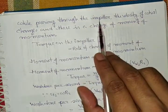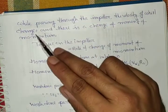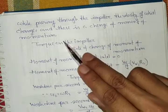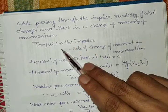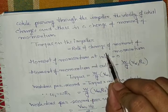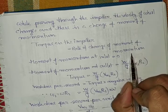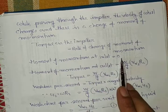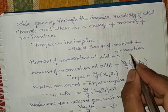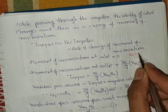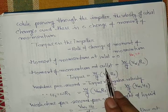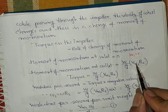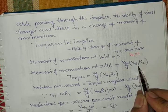While passing through the impeller, the velocity of the whirl changes and there is a change in moment of momentum. Torque on the impeller equals the rate of change of moment of momentum. Momentum at inlet is zero since VW1 is zero, and momentum at outlet will be (W/g)·VW2·R2.